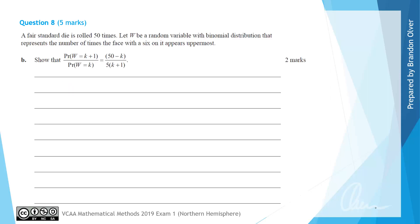For part B we're asked to show that the probability of W equaling K plus 1, divided by the probability of W equals K, is equal to the fraction (50 minus K) divided by 5 times (K plus 1). Before we go too far into this question, I want to write down a formula we'll be using: N choose R equals N factorial divided by R factorial times (N minus R) factorial. We'll need this to complete the show-that question.